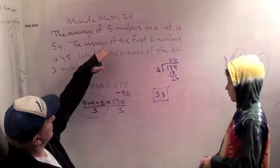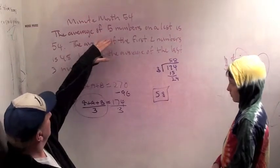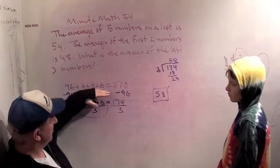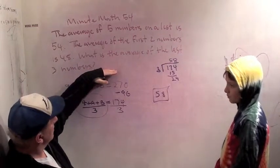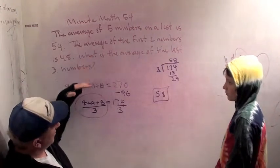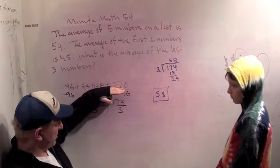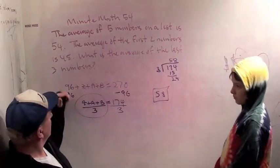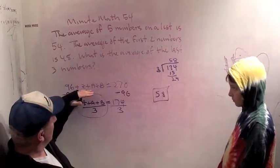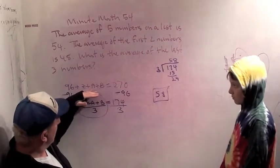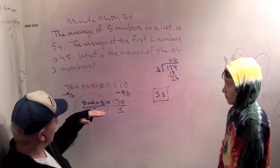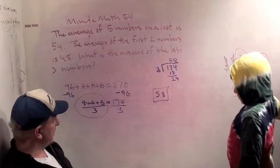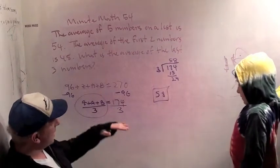So what did we do? Well, the average of five numbers is 54 meant x plus y plus z plus a plus b over 5 is 54. Then we multiply by five to say they sum up to 270. Then we see that the first two numbers sum up to be 96 because their average is 48. That means the last three numbers add up to be 174. That means their average is 174 divided by 3. 174 divided by 3 is 58.